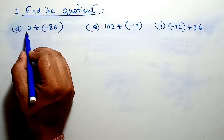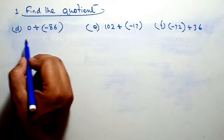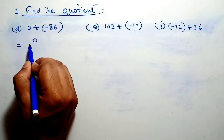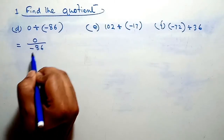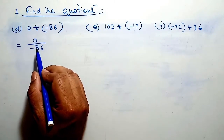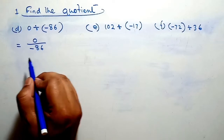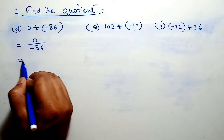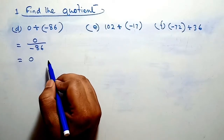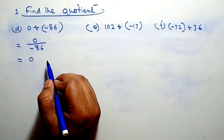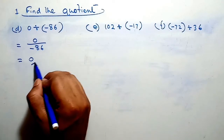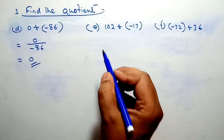Again question D: 0 divided by 36, therefore 0 divided by minus 36. When we divide 0 by any number, the answer will be 0. And 0 is neither positive nor negative. Therefore our answer will be 0.